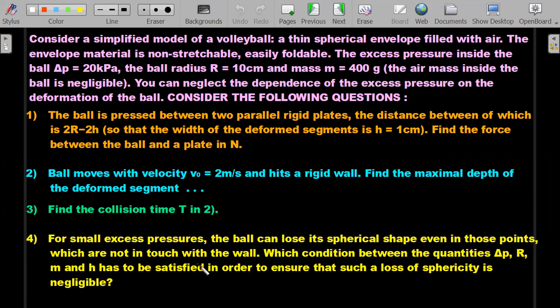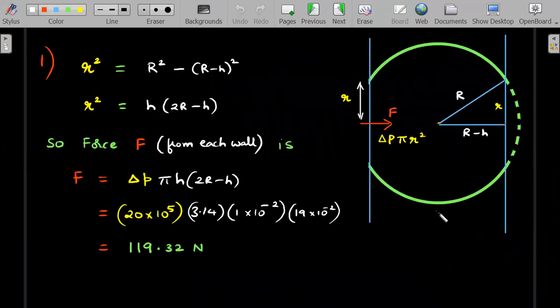We'll go question by question. First, where the ball is pressed against two walls. I have chosen a vertical wall, ignoring gravity in this case. The two blue lines on the right side of your screen represent the wall. I've given you an idea of how the spherical structure has got deformed.